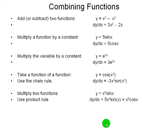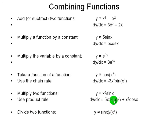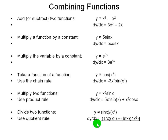The final way of combining functions is dividing one function by another. This has a similar rule to the product rule, but when we take the derivative of the function on the bottom, instead of adding we subtract. This is called the quotient rule. We take the derivative of the first function — the derivative of ln x is 1 over x — and multiply it by the other function, then subtract the derivative of the bottom function times the first function. And there's a twist: we divide the whole thing by the bottom function squared.